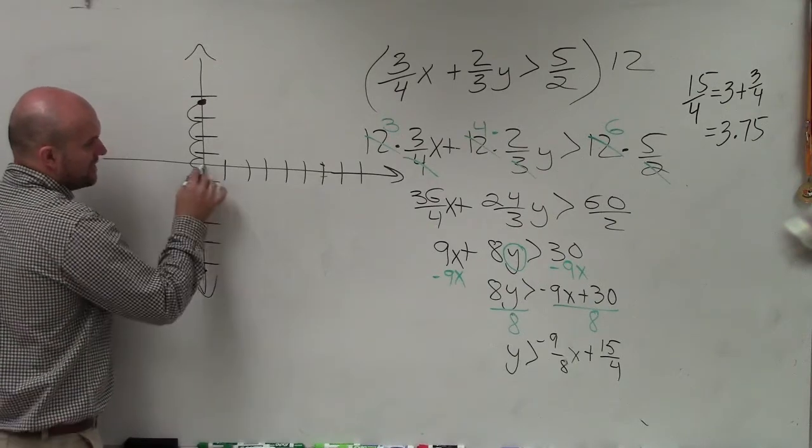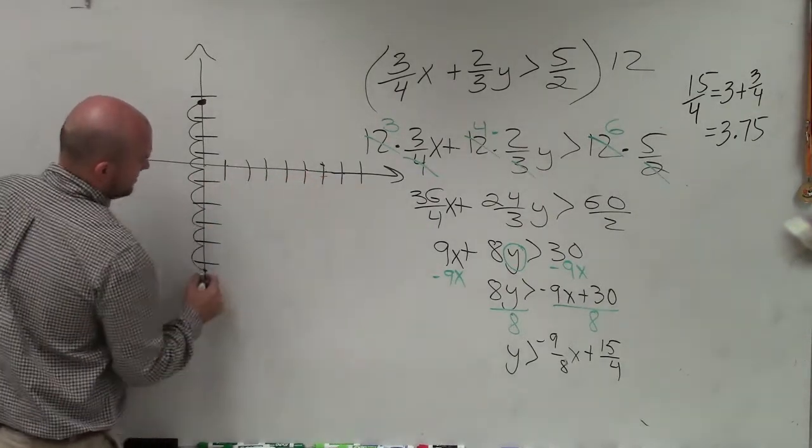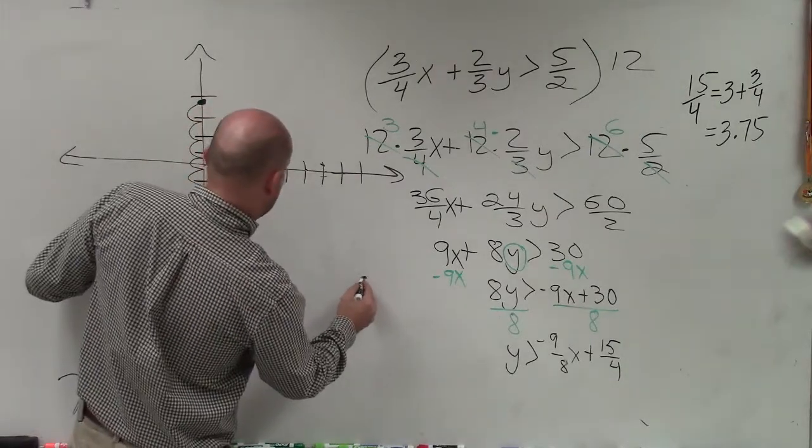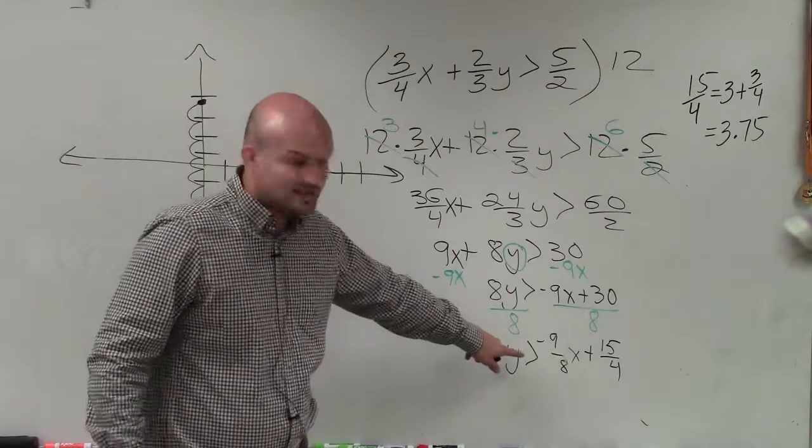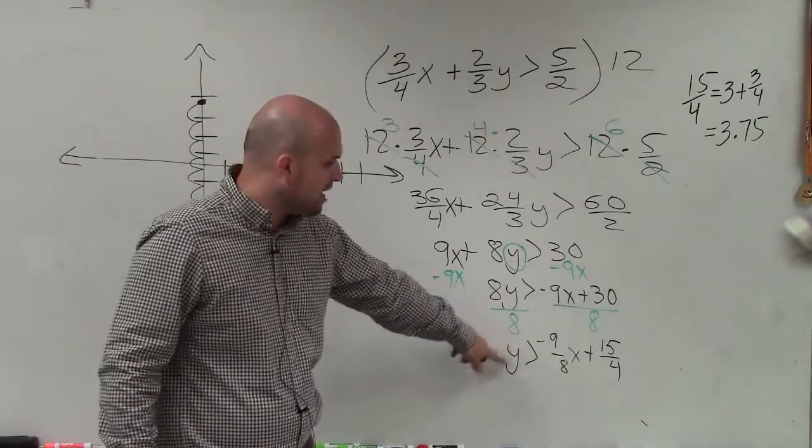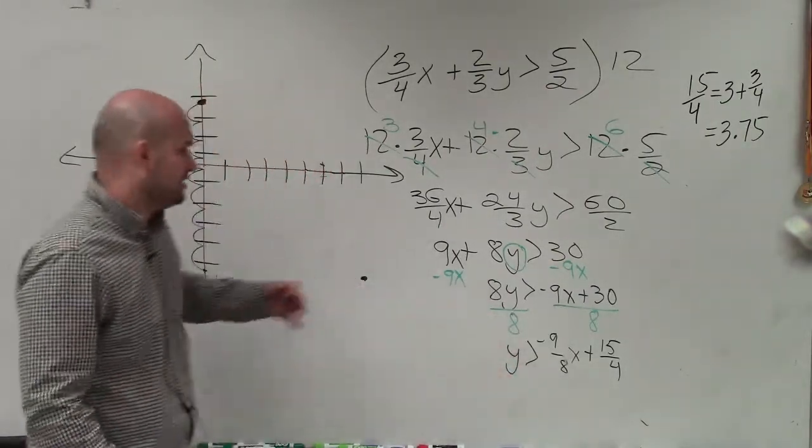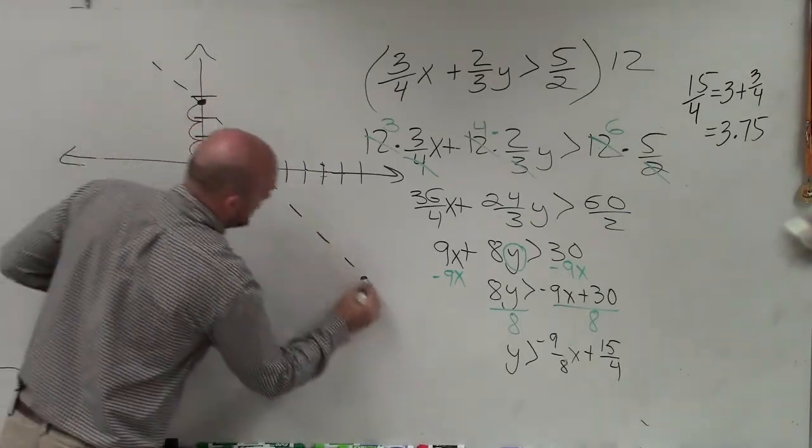And then I go over 8 units, 1, 2, 3, 4, 5, 6, 7, 8. So I go over 8. Now I can connect those two points. But before I connect those two points, I need to determine is this dash or solid line. Since y is greater than, not greater than or equal to, this is actually going to be a dashed line.